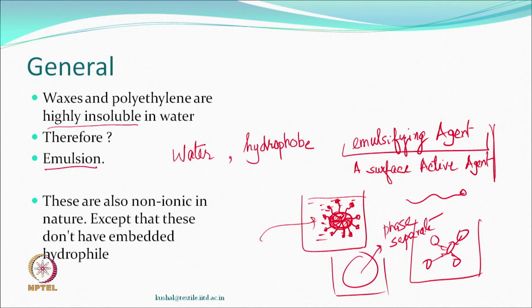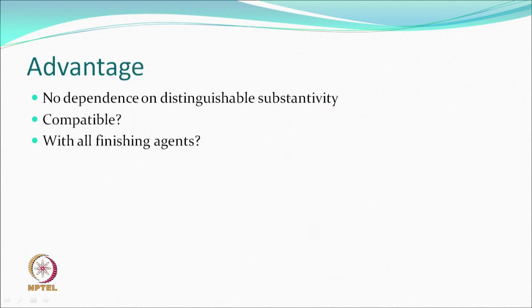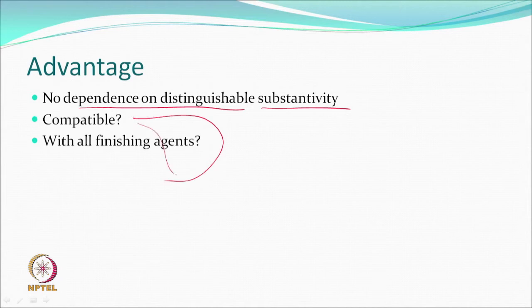We make an emulsion, and a surface active agent helps us do this — all such droplets are surrounded by the surface active agents with their hydrophobic parts toward the hydrophobe and hydrophilic parts exposed to water, making it a stable system. These compounds are something like a non-ionic softener, except that they do not have an embedded hydrophile. But the most important thing they have is the hydrophobe, required for softening. The advantage is these are not dependent on any substantivities, so they can be applied to any textiles and are compatible with all types of finishing systems because they are non-ionic in general.